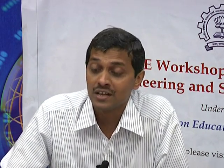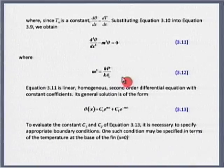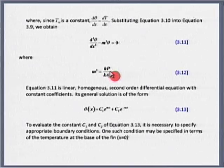The equation reduces to d²θ/dx² − m²θ = 0, where m² = hp/kA_c. H is the heat transfer coefficient between the fin surface and the atmosphere, p is the perimeter, k is the thermal conductivity of the fin material, and A_c is the cross-sectional area. The solution of this second-order linear differential equation is θ = C₁e^(mx) + C₂e^(−mx). To get C₁ and C₂ we need the boundary conditions.